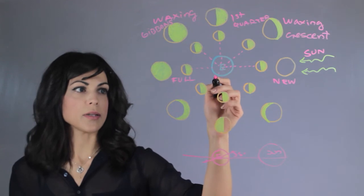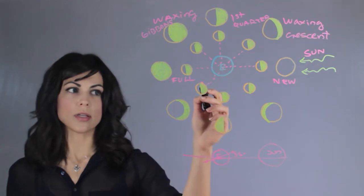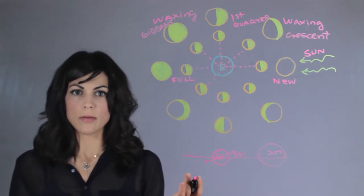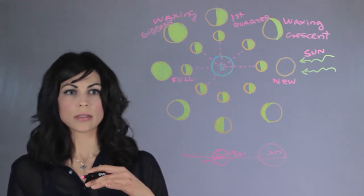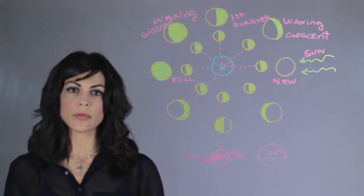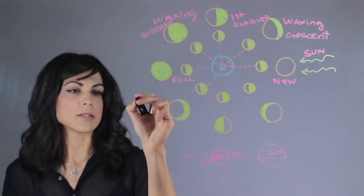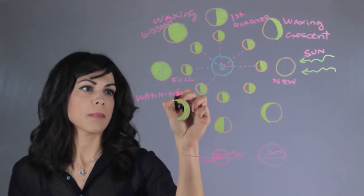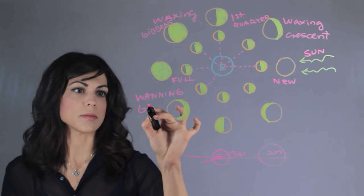So when it comes here, even though you're thinking that you're looking at it mostly lit from this diagram, you actually look at it from 90 degrees. So you see mostly dark with a little bit of a crescent and this is called the waning gibbous.